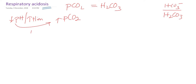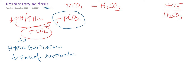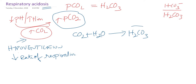What will happen if there is increased carbon dioxide? This increase in carbon dioxide is mainly due to hypoventilation, which is a decreased rate of respiration, leading to accumulation of carbon dioxide. When there is more carbon dioxide, it combines with water to form carbonic acid, which is the acid component of the bicarbonate buffer. So there will be elevation of carbonic acid.